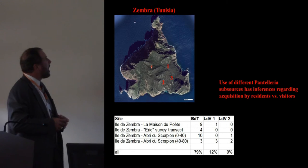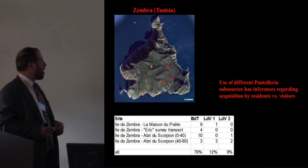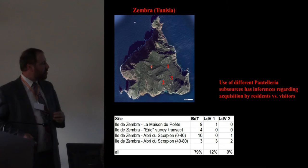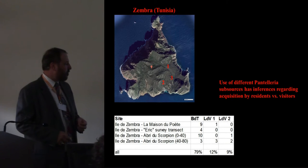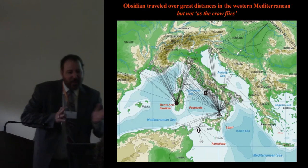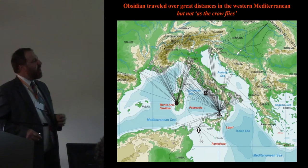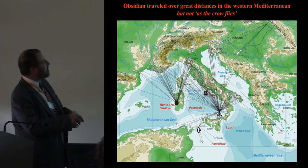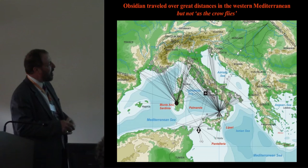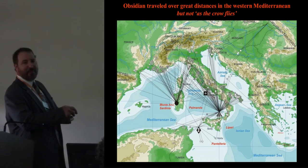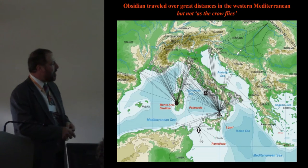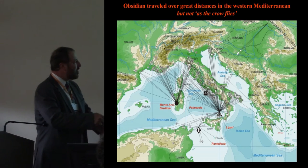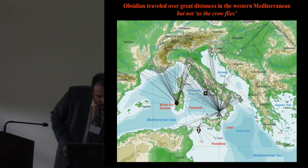Pantelleria is very different — in almost all cases the obsidian is coming from multiple groups that aren't even close to each other: one on the northeast side of Pantelleria and others on the southern side. Zembra, a small island just north of Tunisia, is a good example where the obsidian comes from three different sources on Pantelleria. Chemical analysis can absolutely confirm that a piece of obsidian found in southern France came from Pantelleria, but we know it did not travel as the crow flies. The same is true for movement between Lipari and Pantelleria — these were not straight-line routes.